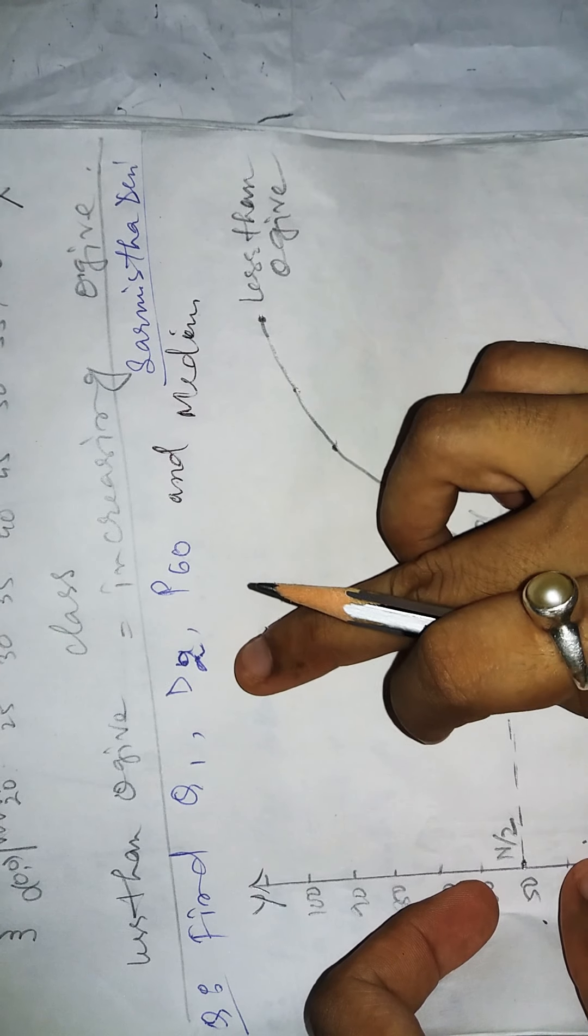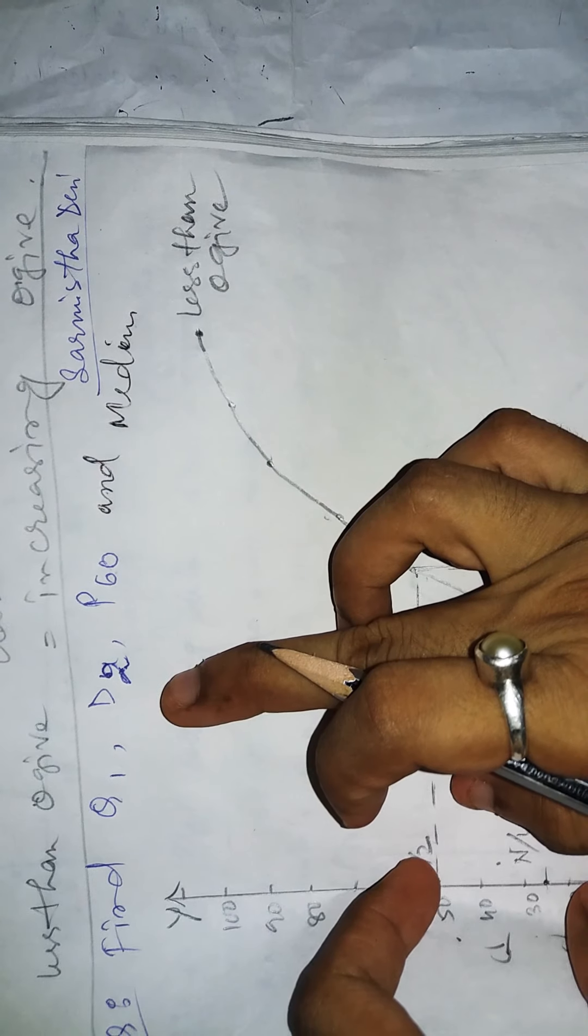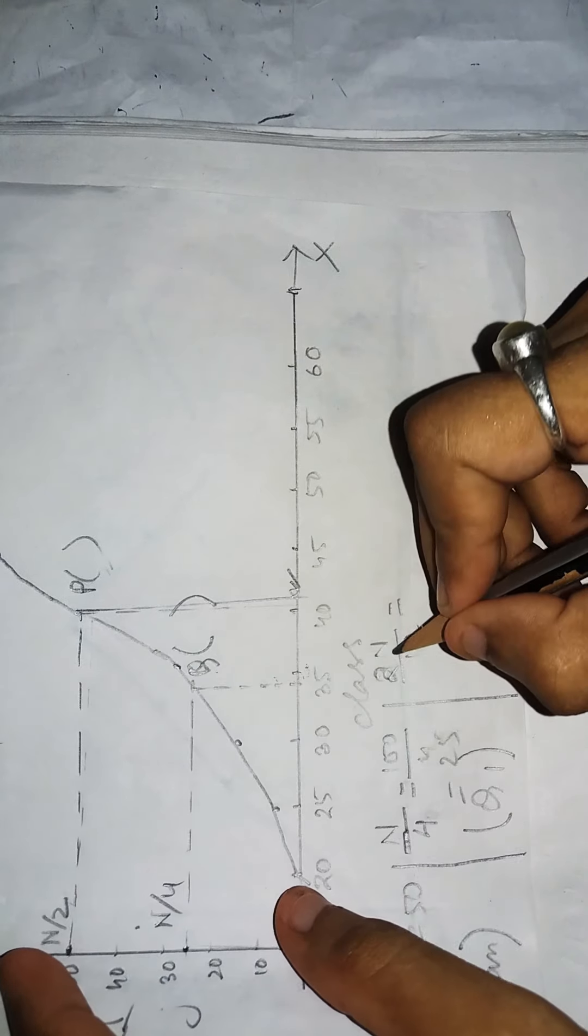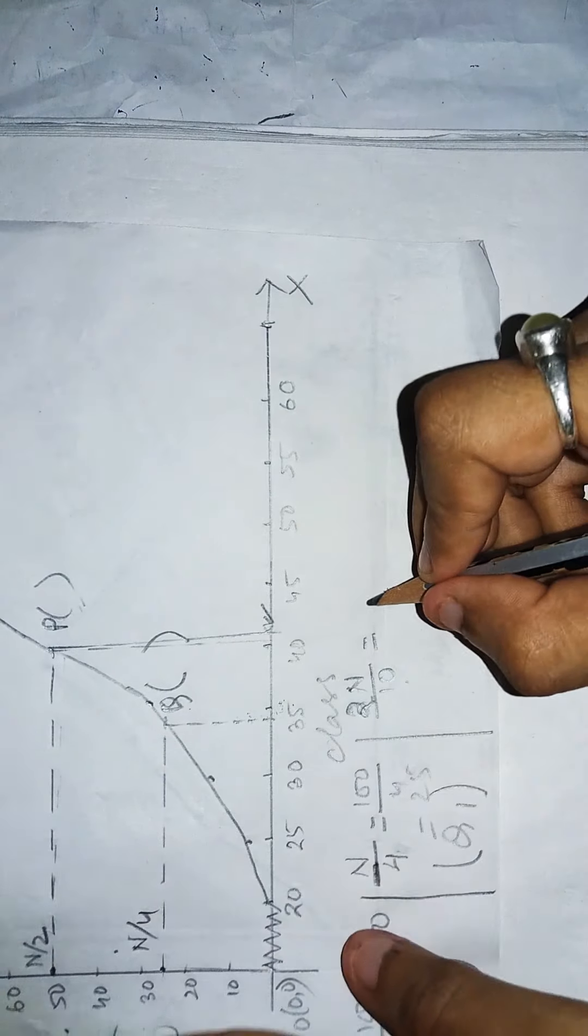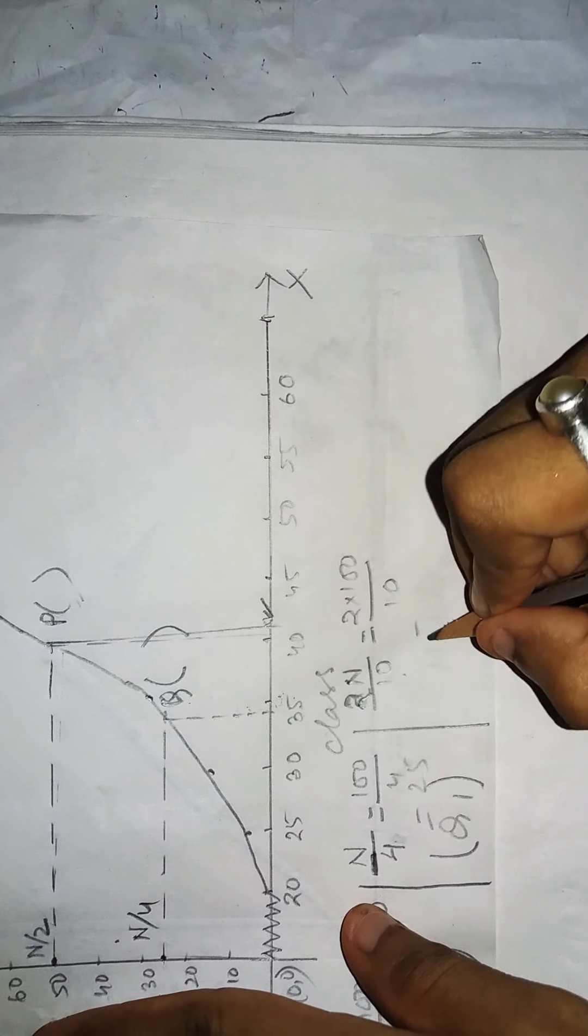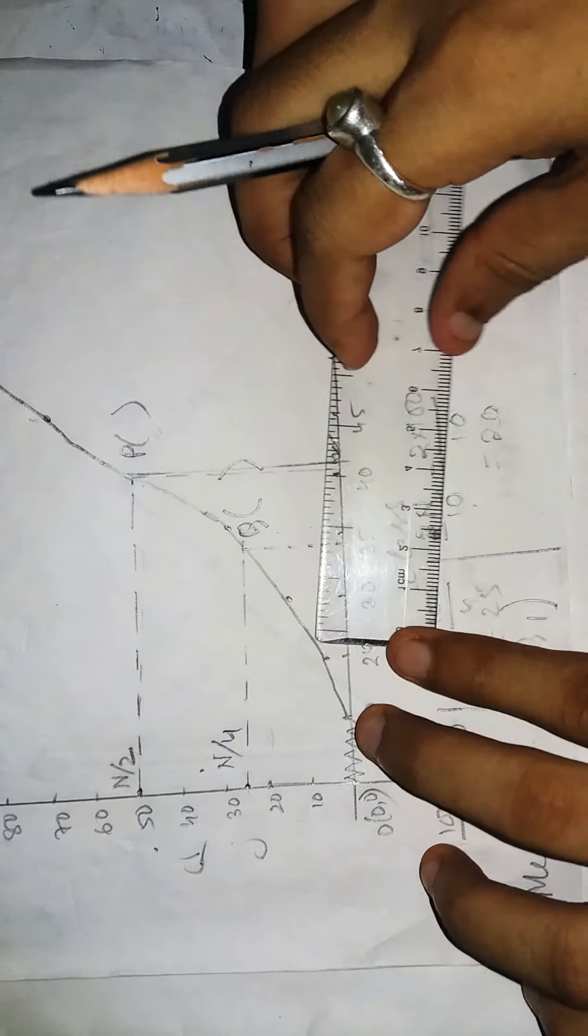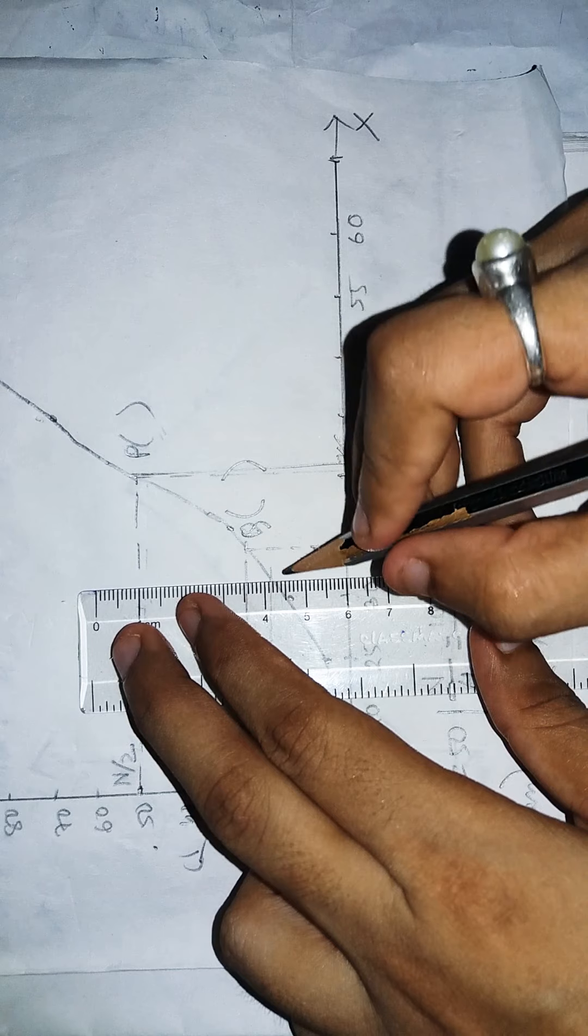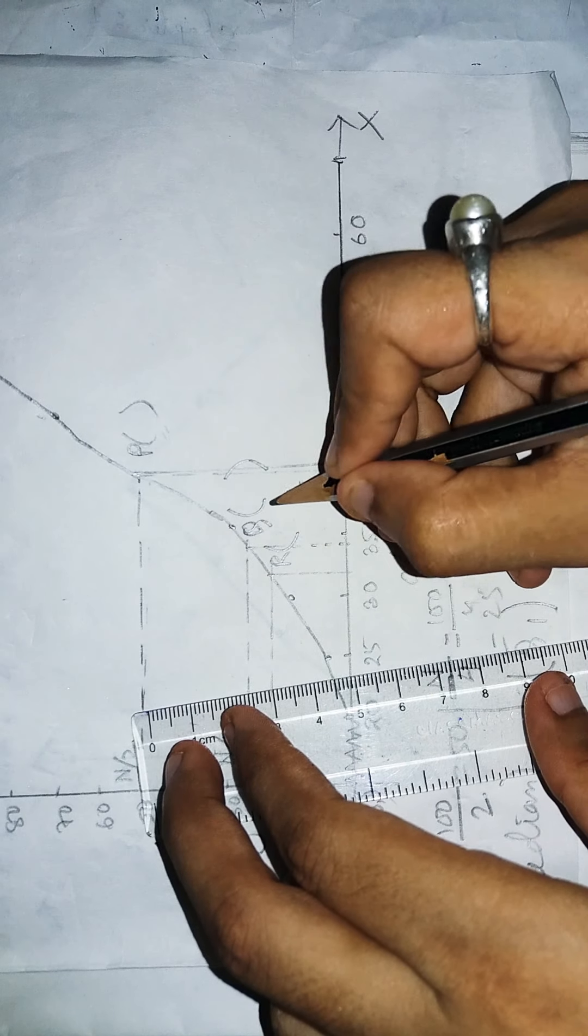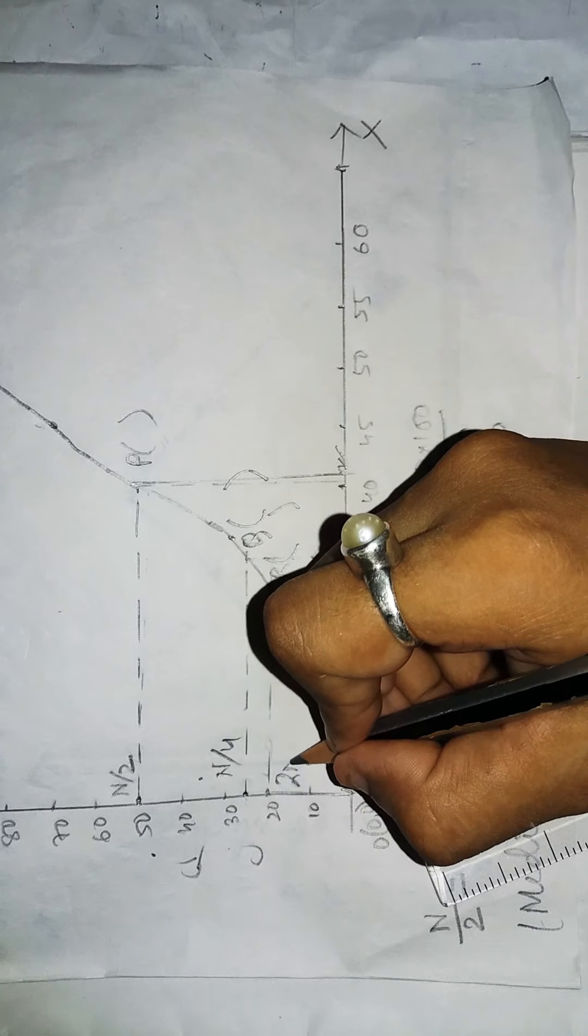Similarly, for D2, D means deciles. The deciles divide the distribution in 10 equal parts. So find the value of 2n by 10. For the calculation, 2 into 100 divided by 10 will be 20. Again, draw a perpendicular to less than ogive and find the abscissa, which will be the value of the second decile.